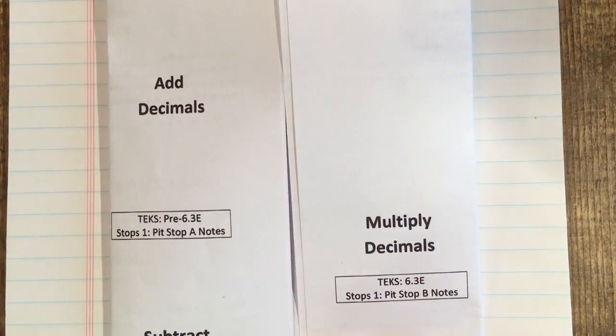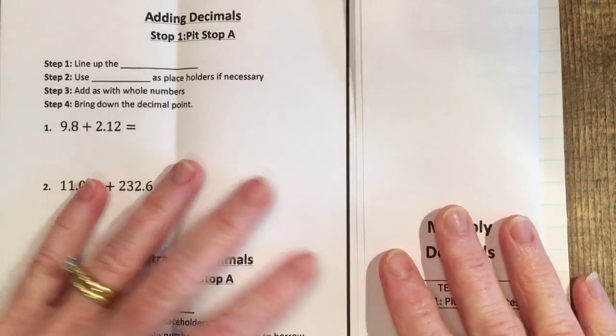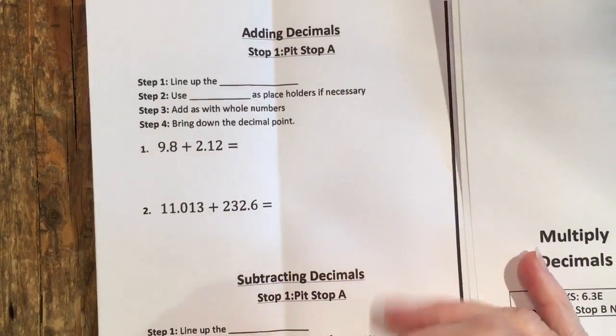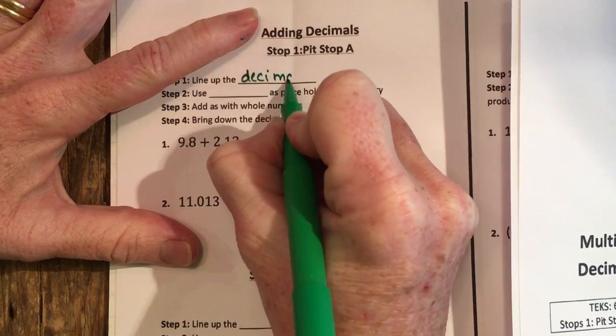Hi there, so today we're going to be talking about adding and subtracting decimals and hopefully this is a review for you. The first step when you're adding decimals is to line up the decimal. You have two numbers.